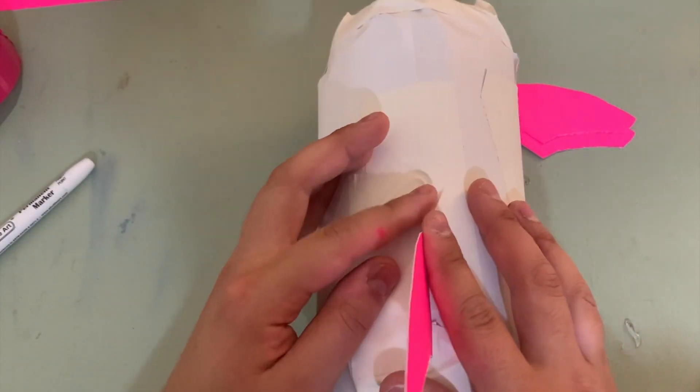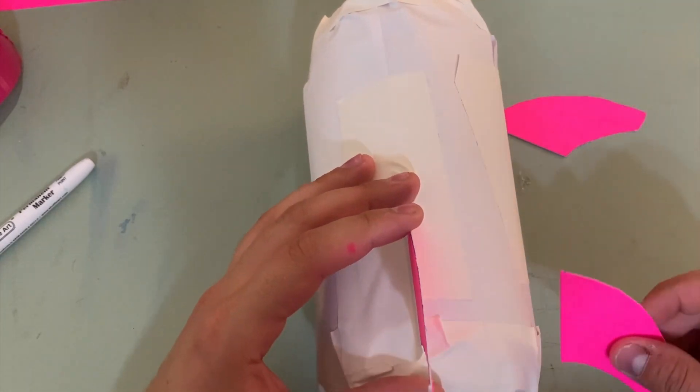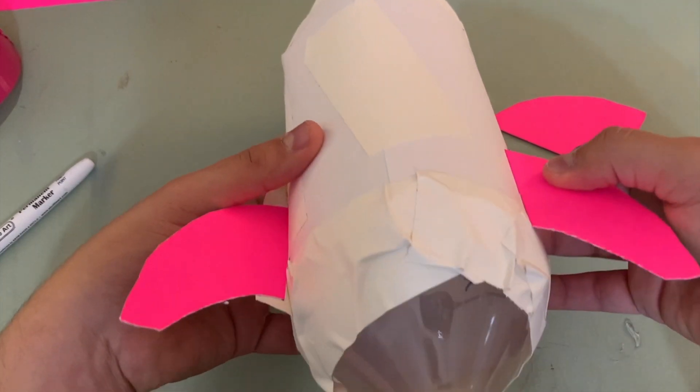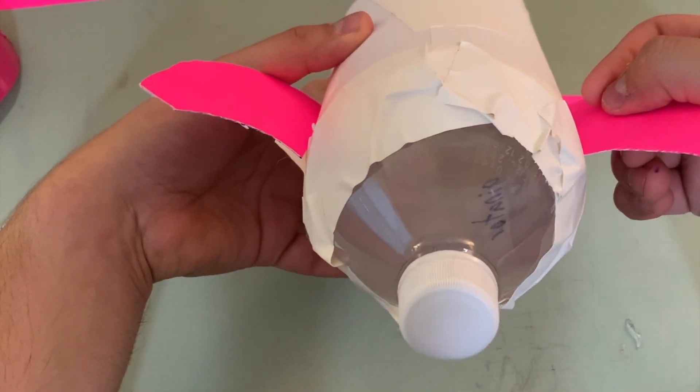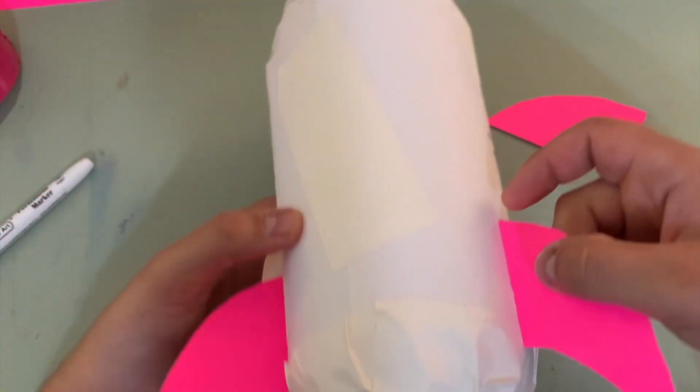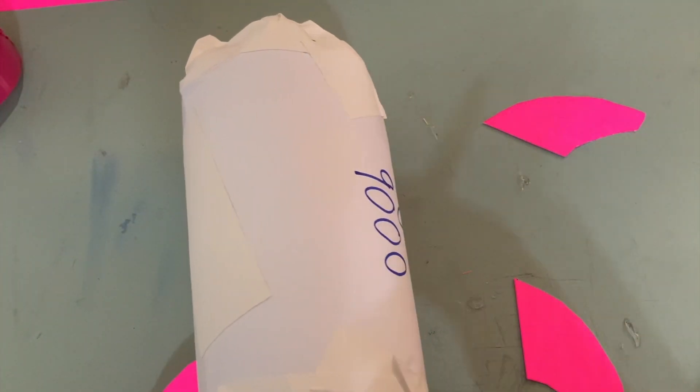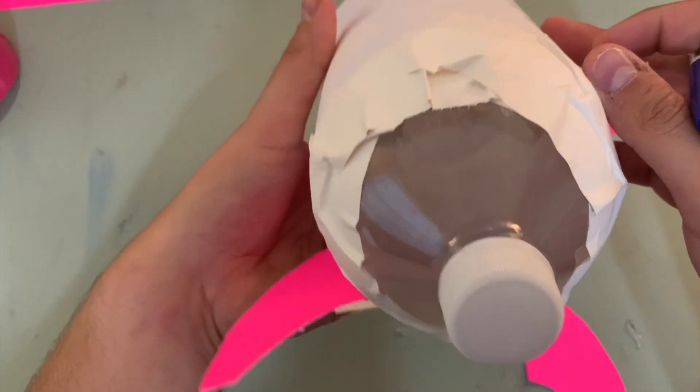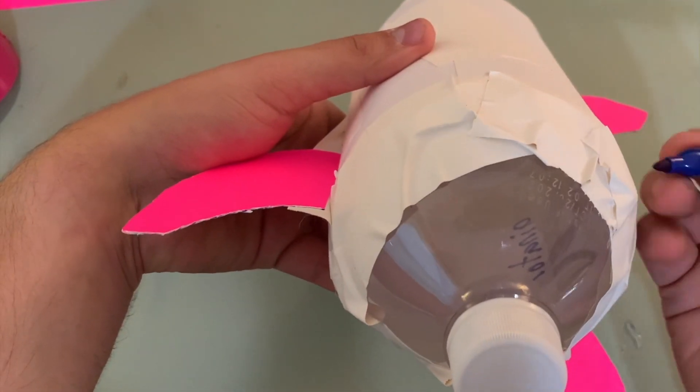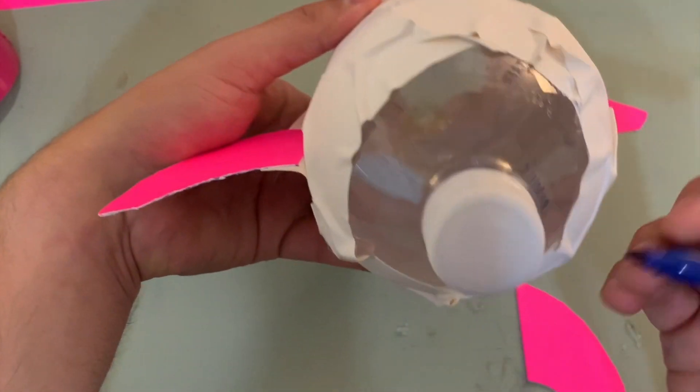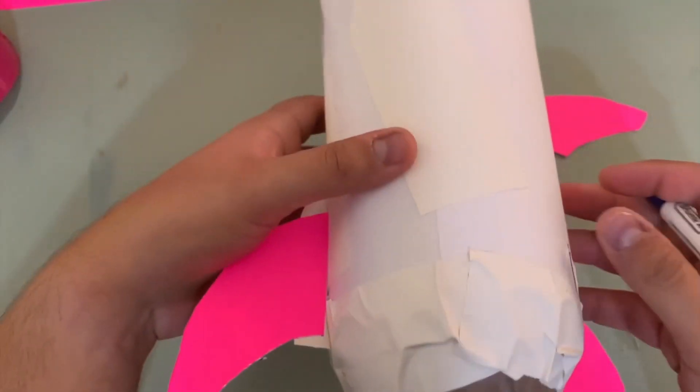Okay, the challenge here is we want to make sure that all three of our fins are evenly spaced out. So you'll have to do a little bit of eyeballing. To me, right there looks good. So I'm going to put a mark. Mark right there. And a mark down there.